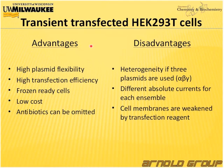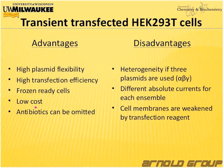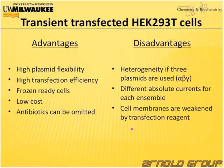Using transient transfected HEK293 cells has advantages and disadvantages. The advantages are high flexibility by using different plasmids, high transfection efficiency, and the ability to freeze cells after transfection and thaw them when needed. They have relatively low cost and we can omit antibiotics compared to stable transfected cells. The disadvantage is that we have to transfect three different plasmids, so there is a degree of heterogeneity. Also the absolute currents for the ensembles can differ, but the relative relationship is always the same, and the transfection reagent may weaken some cell membranes.